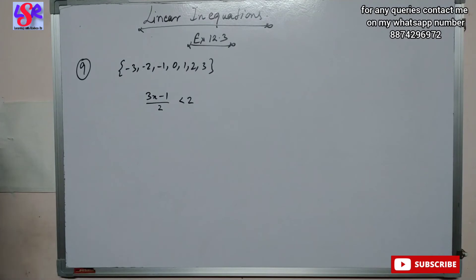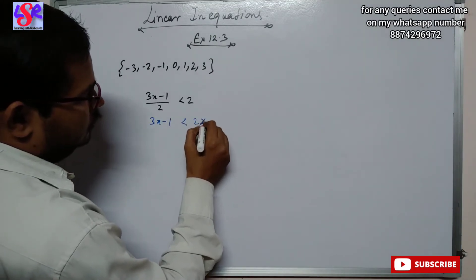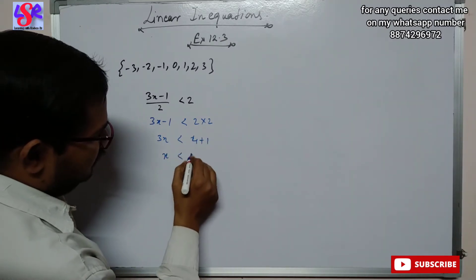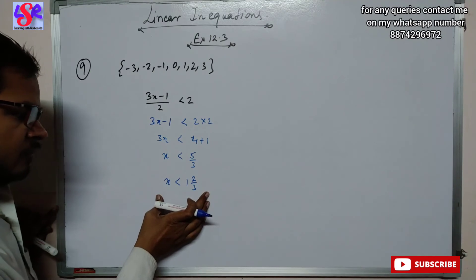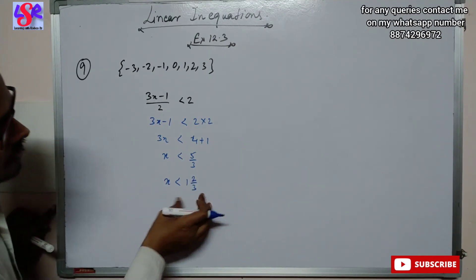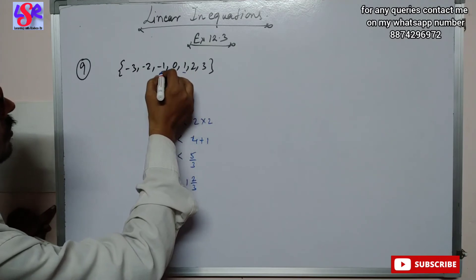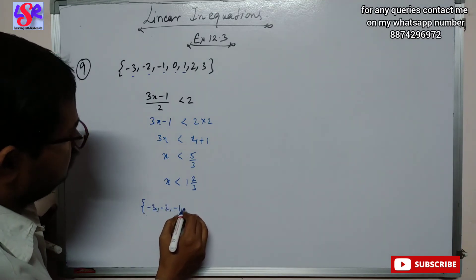Now let's move to question number 9. Here we have a replacement set and an equation. We solve: 3x minus 1 is less than 2 into 2, giving 3x is less than 4 plus 1. So x is less than 5 by 3, which is 1 and 2/3. Numbers less than 1 and 2/3 from the replacement set include 1, 0, minus 1, minus 2 and minus 3. So the solution set is minus 3, minus 2, minus 1, 0 and 1.